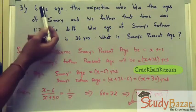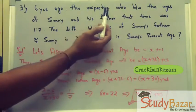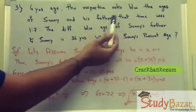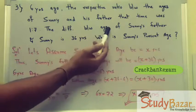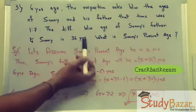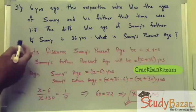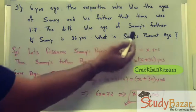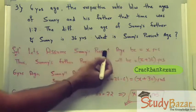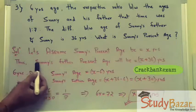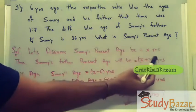Now let's see a different type of question. It's given that six years ago the respective ratio between the ages of Sunny and his father was 1:7. The difference between their ages is 36 years, and we have to find Sunny's present age. In this type of question, we assume the unknown, which is Sunny's present age, as x years.